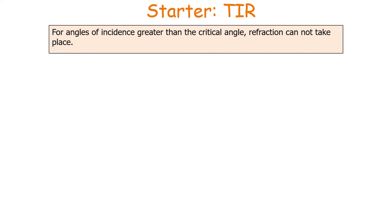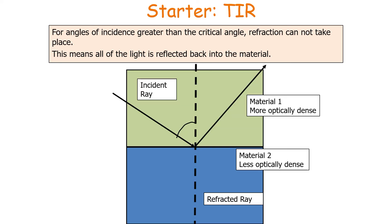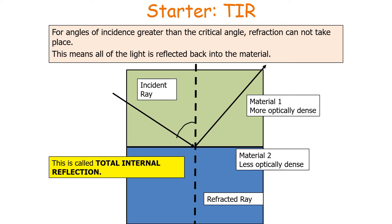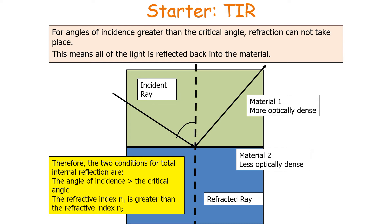For angles of incidence greater than the critical angle, refraction cannot take place, and all of the light is reflected back into the material — you get no refraction, only reflection. We call this total internal reflection, because all of the incident light energy is reflected back into the material and none is lost. The two conditions for total internal reflection are: first, the angle of incidence must be greater than the critical angle; and second, the refractive index n1 must be greater than n2.